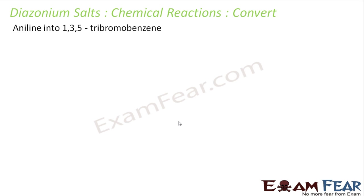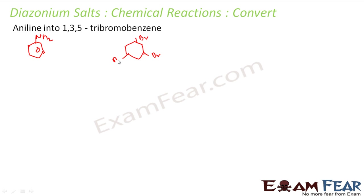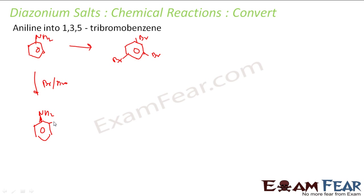The next problem: convert aniline to 1,3,5-tribromobenzene. I have aniline here, and I have to convert it to tribromobenzene — positions 1, 2, 3, 4, 5. I have to do two things: first add bromine, and then remove the NH2. Let's first add bromine — it's pretty easy. Using bromine water, what will happen is bromine adds at the ortho and para positions.